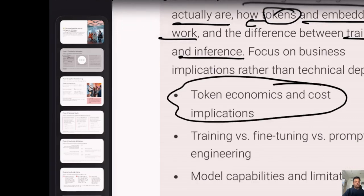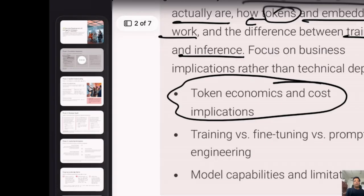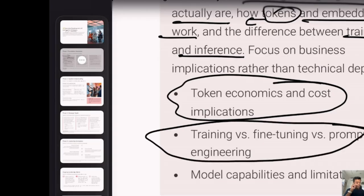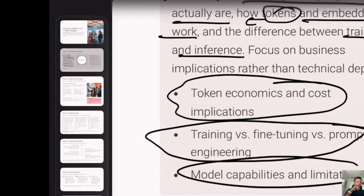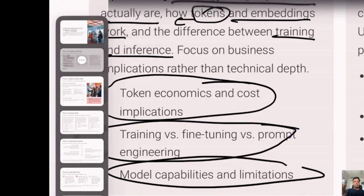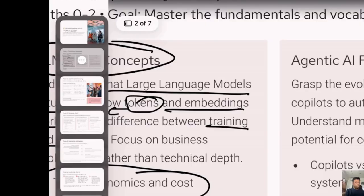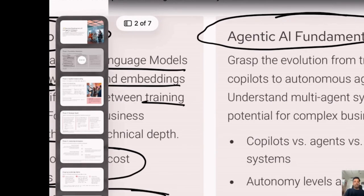You should also understand tokens because they have a clear impact on cost. When you develop an LLM solution, cost is a key consideration — you can't just throw LLMs at something without understanding the cost aspect. Learn about training versus fine-tuning, prompt engineering, and model capabilities. There are image models, text models, visualization models — each LLM is trained for different purposes. Know the limitations as well as the capabilities, and know where you host those LLMs. There's also the new concept of agentic AI.